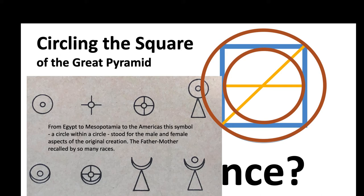This symbolism of circling the square, the Great Pyramid is plainly channeling this creation - the Zep Tepe, the original creation that Egyptians refer to.